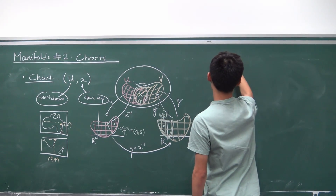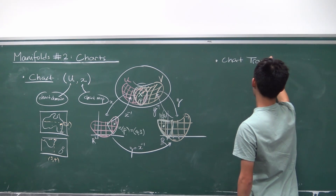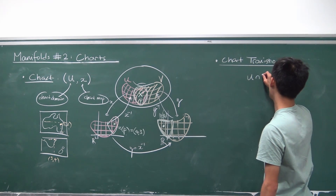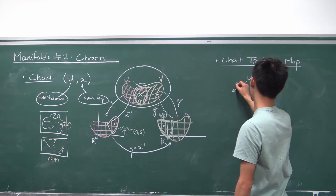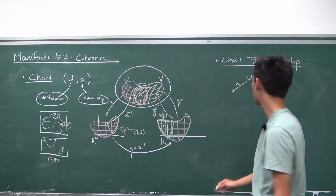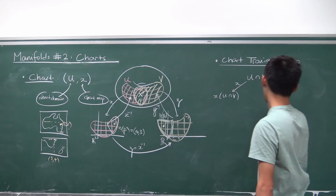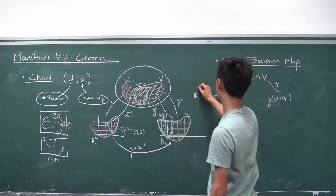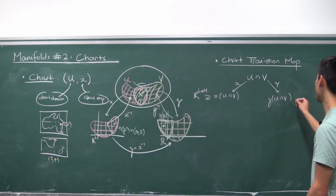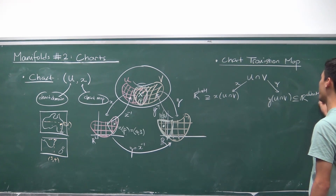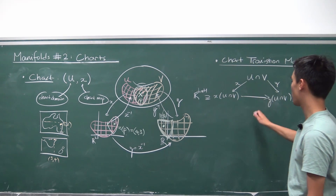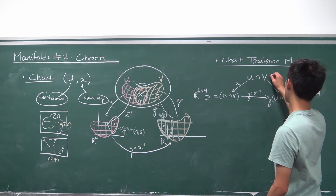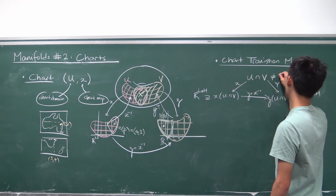So now we have what we call the chart transition map, or just the transition map for short. For the chart transition map you need two charts that are slightly overlapping, with chart domains U and V. You look at the intersection, then map down via X and via Y into these local Euclidean spaces, giving you X(U ∩ V) and Y(U ∩ V). Both of these are subsets of R^(dim M), the dimension of the manifold. The transition map just takes you between these two spaces. Notice that Y after X inverse is just a map between Euclidean spaces, which is nice. We're just assuming that U ∩ V is not equal to the empty set.